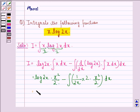This is equal to x square by 2 log 2x minus... Now we see 2 gets cancelled with 2, x gets cancelled with one of the x, so we have 1 by 2 integral x dx.